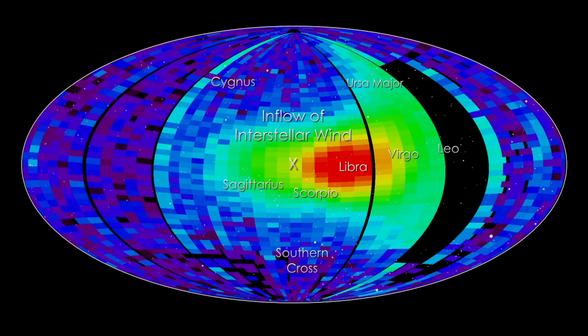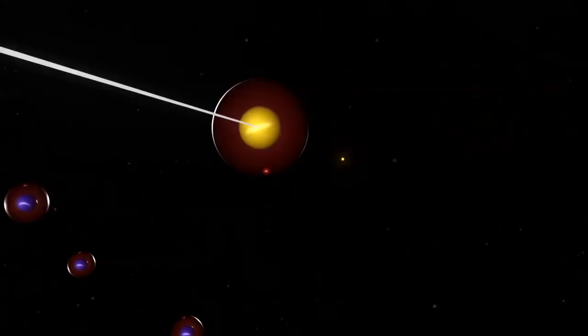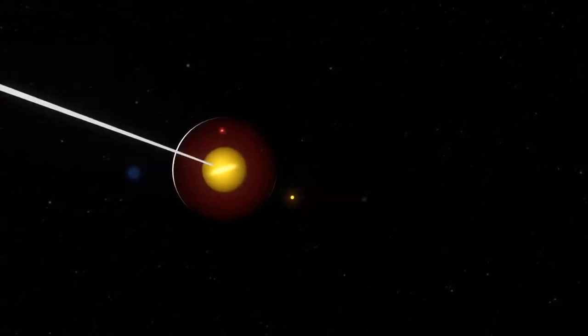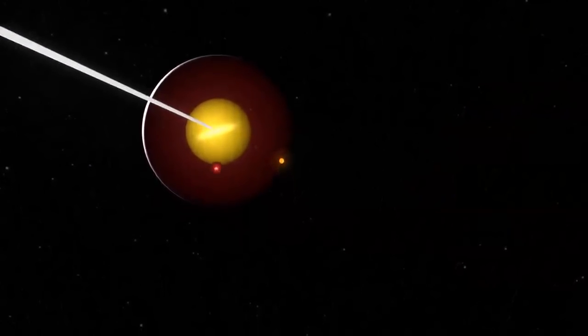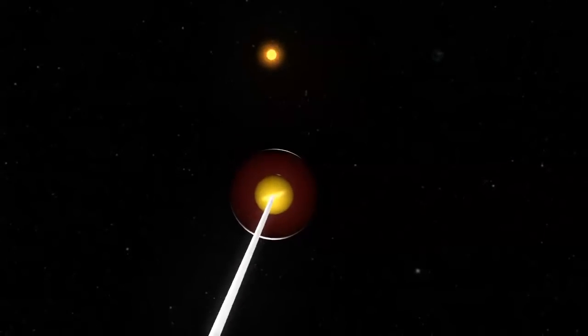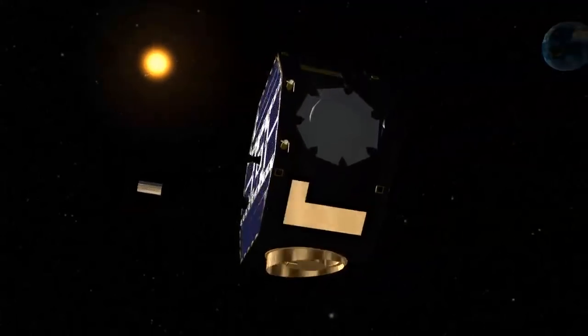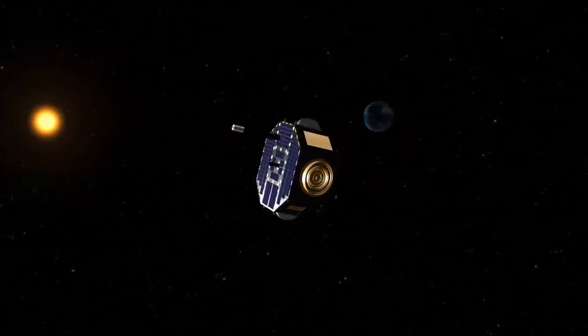Many instruments have seen the characteristic spectra of elements outside the solar system, but IBEX is actually detecting atoms from interstellar space that punch through the heliopause and strike the spacecraft. Only some of the atoms that make up the galactic wind can do this.